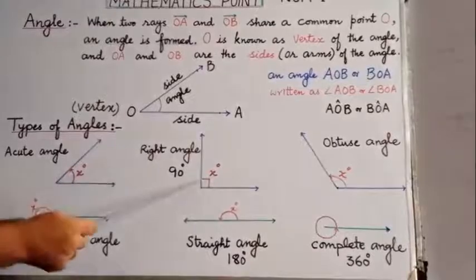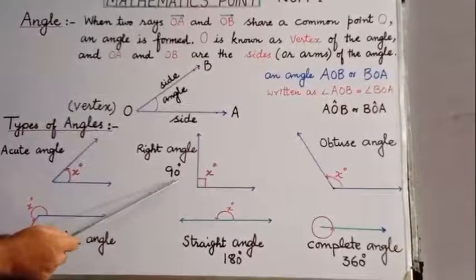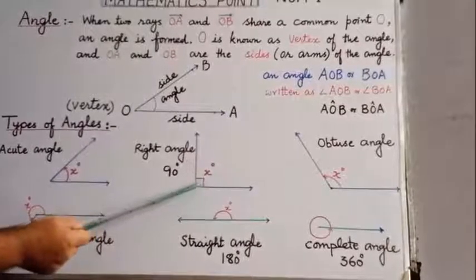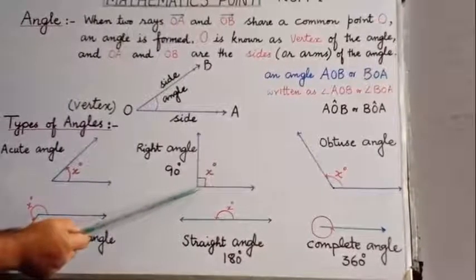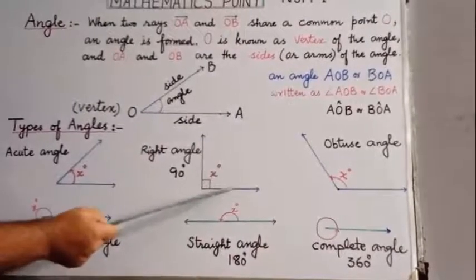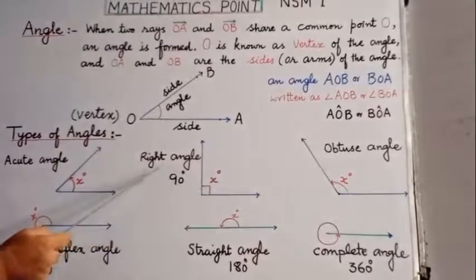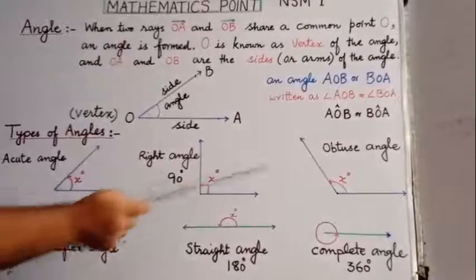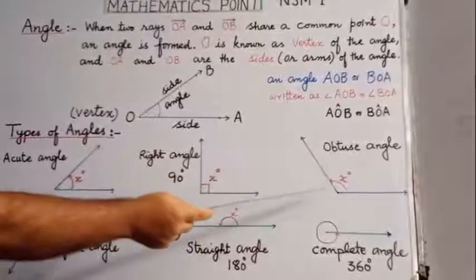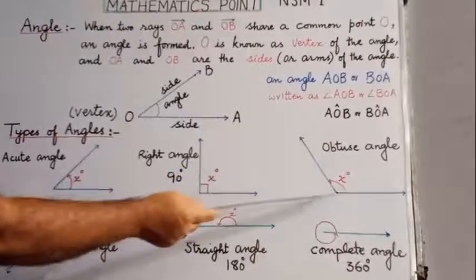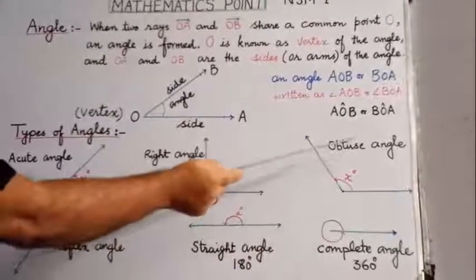Now we come to the right angle. This angle is exactly equal to 90 degrees. Look at this square symbol — it means it is a right angle, equal to 90 degrees. Now here you can see an obtuse angle — this angle is greater than 90 degrees but less than 180 degrees, so it is called an obtuse angle.